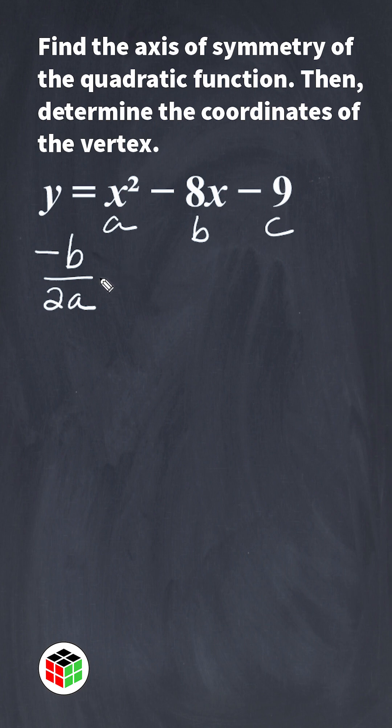To find the axis of symmetry, we need the a value and the b value, so let's substitute those values into our equation. We end up getting negative b, and b in this case is negative 8, so we substitute negative 8 in for b, and then we just double a. There is nothing in front of the x, meaning our coefficient is 1, so we would double 1, which would be 2. That gives us positive 8 divided by positive 2, which is equal to 4.